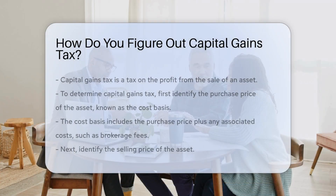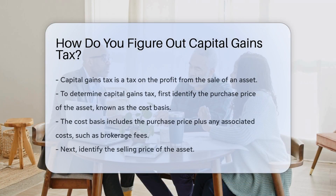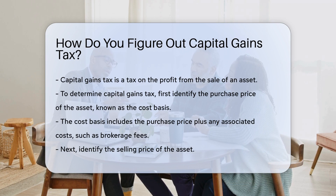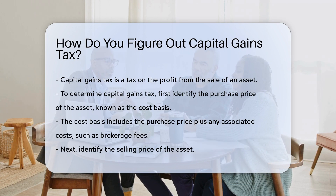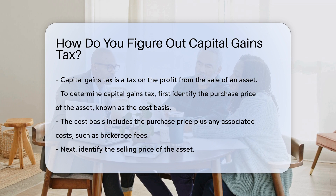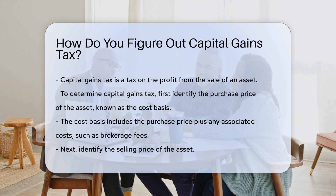Capital gains tax is a tax on the profit from the sale of an asset. To determine your capital gains tax, you first need to know the purchase price of the asset. This is known as the cost basis. The cost basis includes the purchase price plus any associated costs, such as brokerage fees.